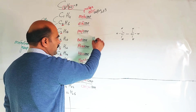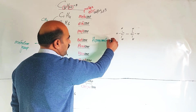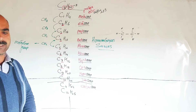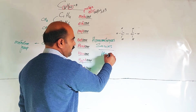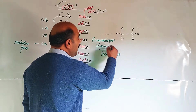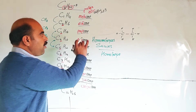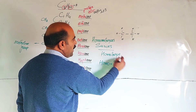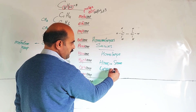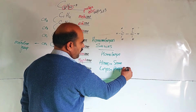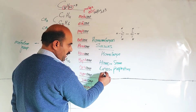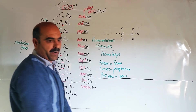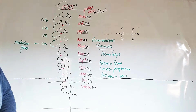This is a homologous series, and each member of the series is called a homologue of the other. 'Homo' means the same, 'logous' means properties, and 'series' means a row or sequence. So homologous series means a sequence of compounds with the same properties.